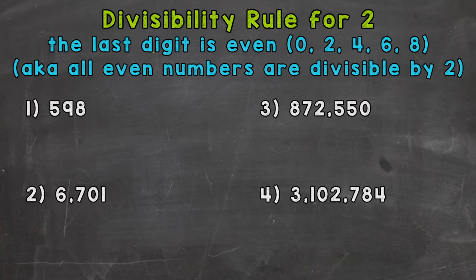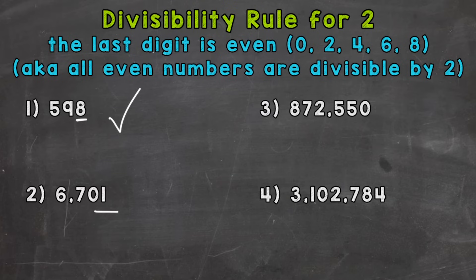So let's go into our four examples here and see if these numbers are divisible by 2. Number 1, we have 598. The last digit is an 8, so that means 598 is even and therefore divisible by 2. Number 2, we have 6,701. The last digit is a 1, so that is not an even number, therefore not divisible by 2.